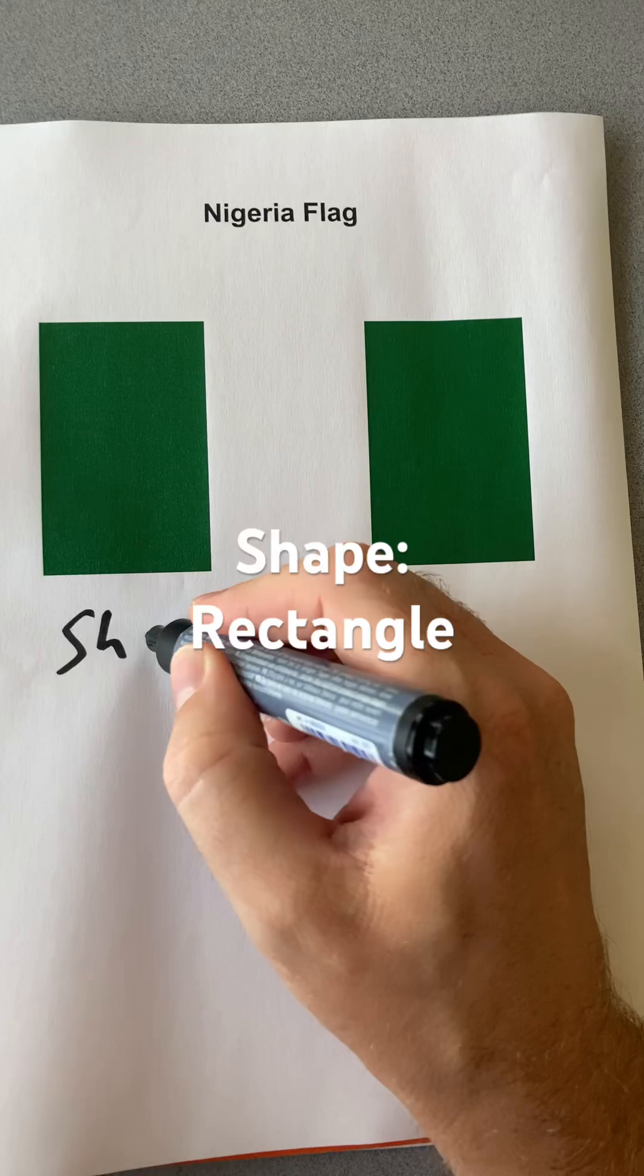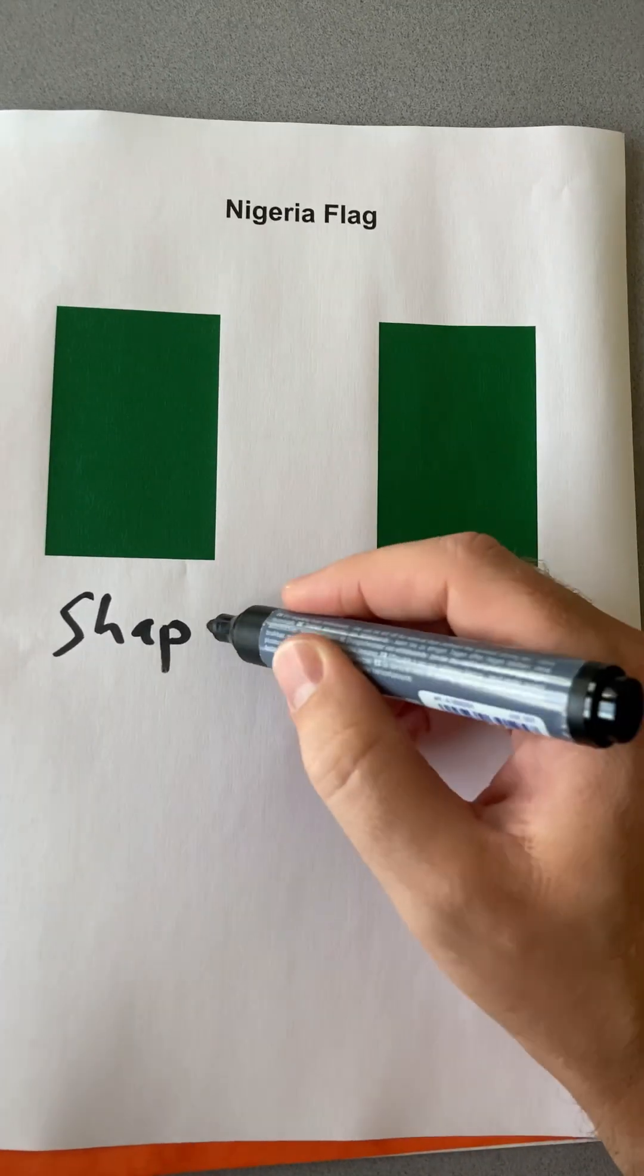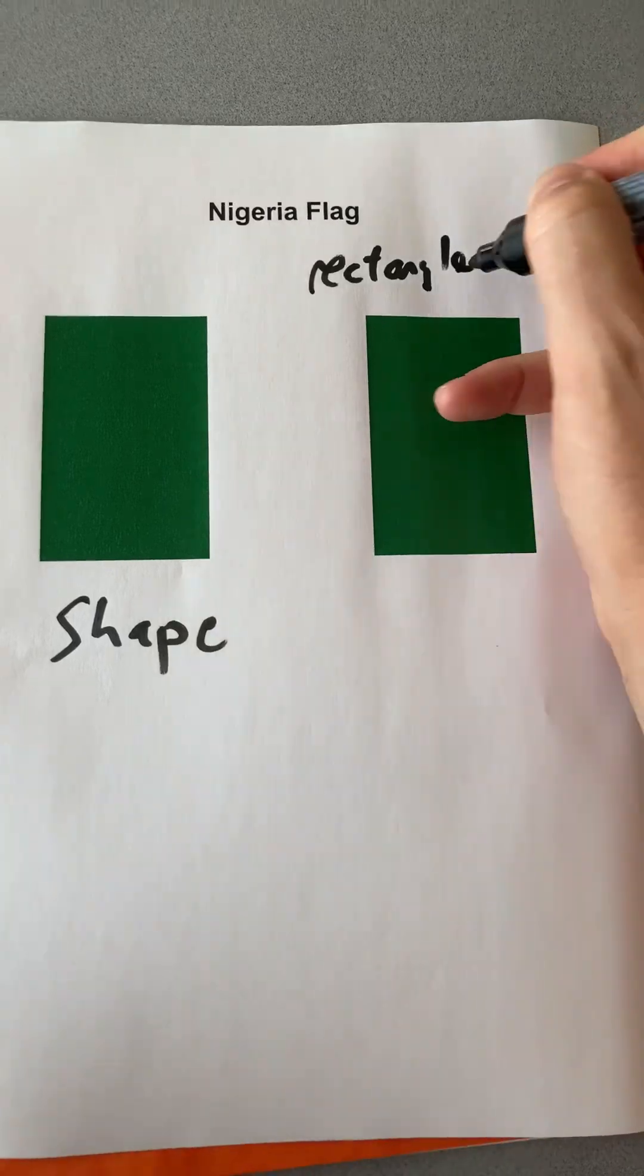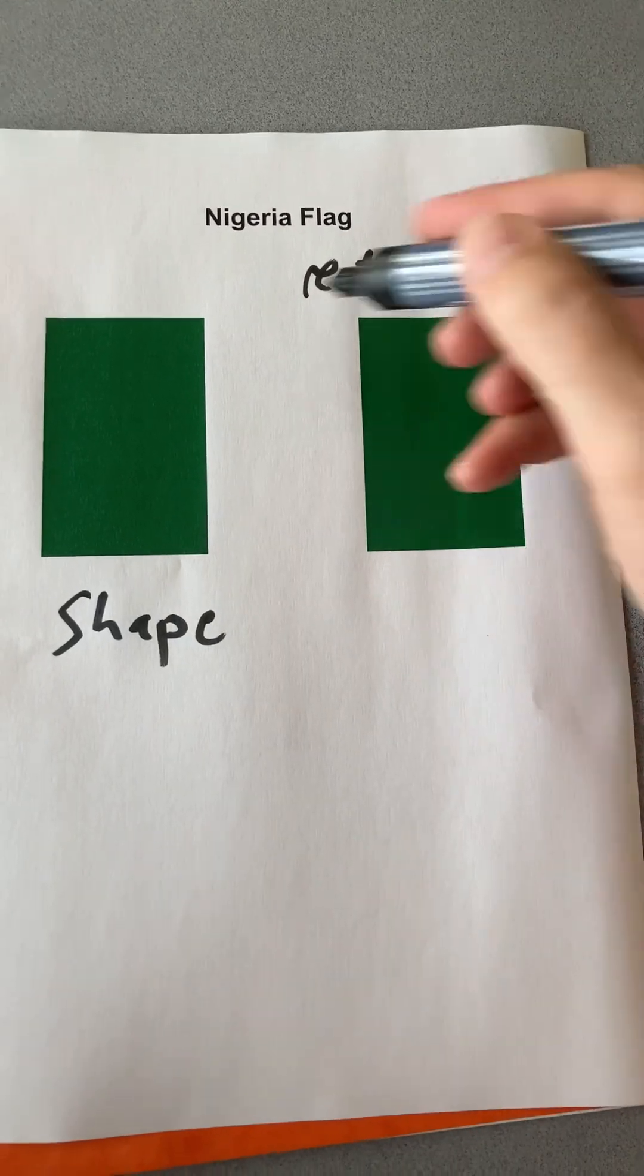Start off with shapes. We can see there are three rectangles making up the bigger rectangle.